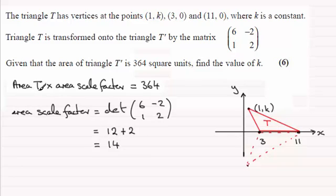So what we've got here is the area of T times 14 will give us 364. So what is the area of T? Well, the area of triangle T is going to be equal to half the base. We can see that the distance across here is 8 units, so you've got 8 divided by 2, half the base times the height which is k, so you end up with it equaling 4k.